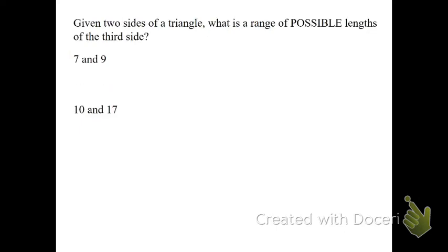Next for this one, they give you two sides and ask, what are the possible lengths of the third side? Well, the easiest thing to do is just take the two numbers they give you, add them and subtract them. Add them, you get 16. Subtract them, you get two. And we're talking about sides of a triangle, so it's always a positive answer. That means my third side has to be between two and 16. So we write X, which is the third side, has to be between two and 16.